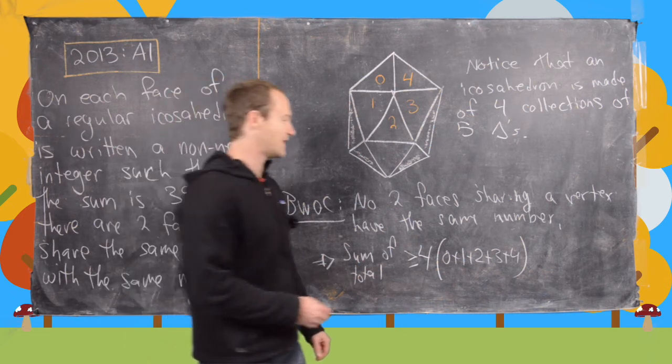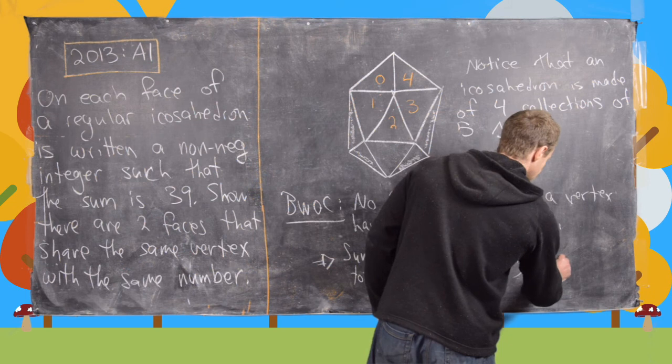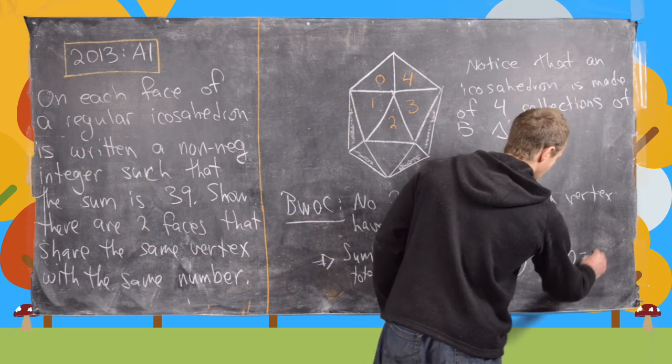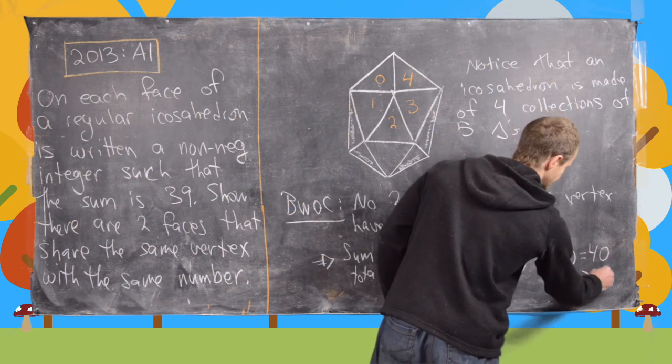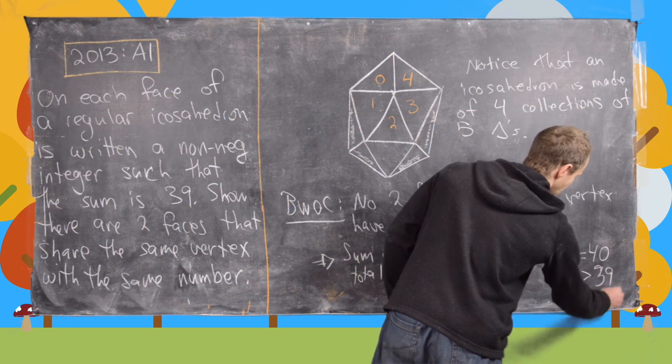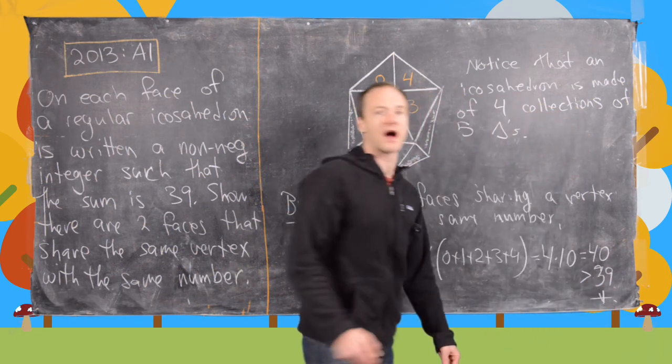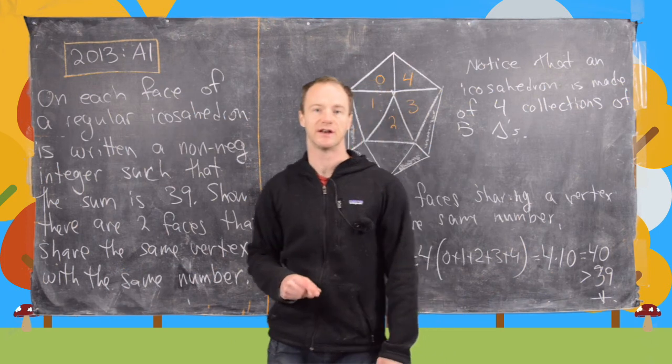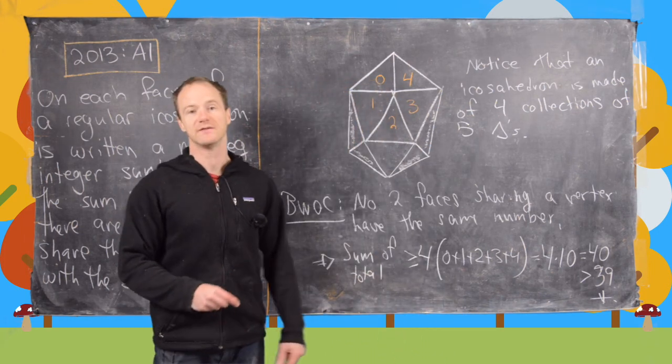But now if you add that up, that's equal to four times ten, which is obviously equal to 40, which is strictly greater than 39, which is where we arrive at our contradiction because it says the sum is 39. And that's the end of this problem.